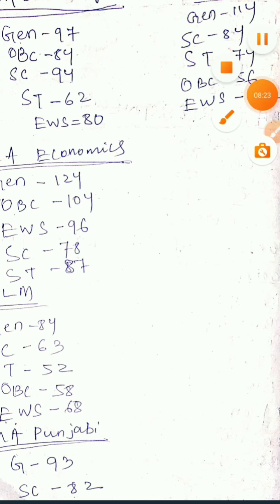Next, MA in English: General is 114, SC is 84, ST is 74, OBC is 56, EWS is 52. And here all the courses have ended — these are all the cutoff marks you require to get a seat in Central University of Punjab. Thank you.